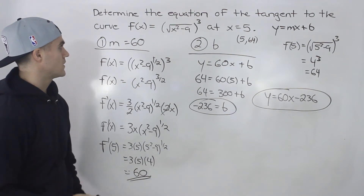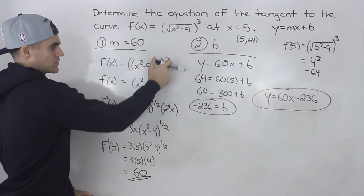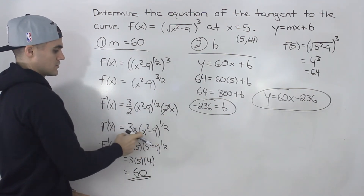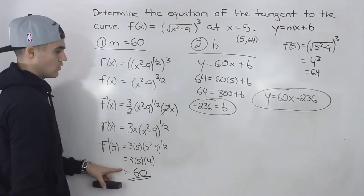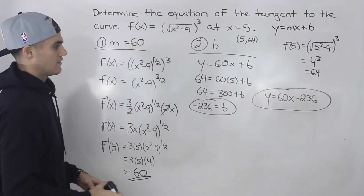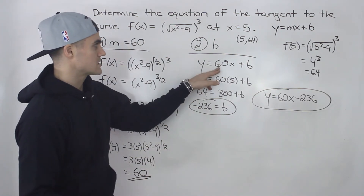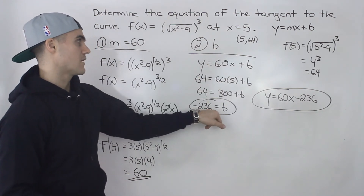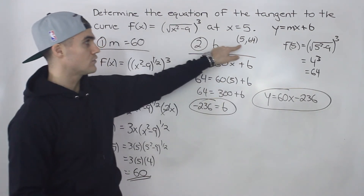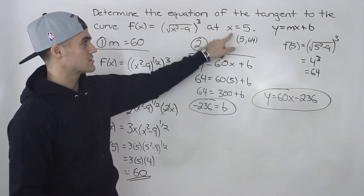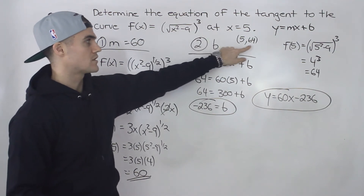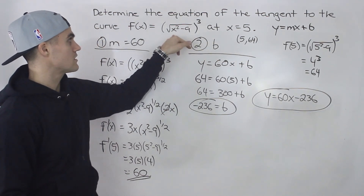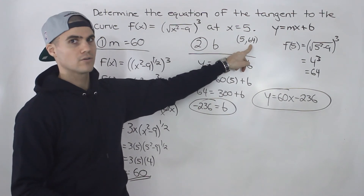Not too bad of a question. To summarize: first simplify the function using rational exponents, then derive it, plug in x equals 5 to get the slope of 60, and use that slope along with the point on the function to solve for b. Sometimes the question gives you the full coordinate, and sometimes only the x value — in which case you find y by plugging into the original function.